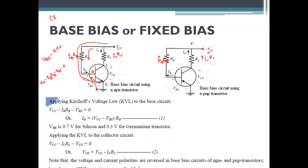Applying KVL to the collector circuit: VCC minus the drop across RC (which is IC × RC) minus VCE equals 0. From this, you can separate and get the equation: VCE = VCC − IC × RC. So you now have two equations.